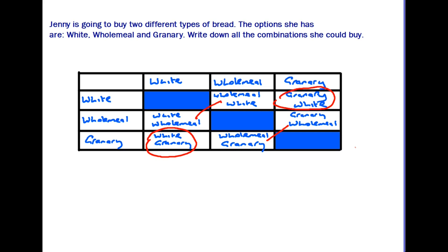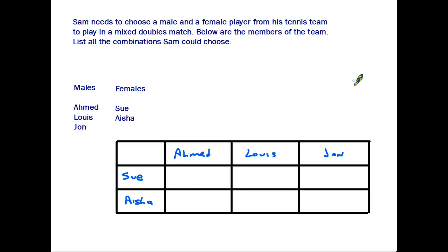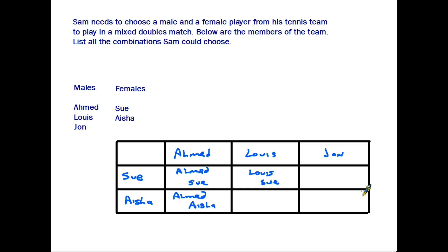It depends on the question as to how you would answer this, because you wouldn't need to put each combination twice unless it was a question asking you to put things in order. Finally, a very typical type of question: Sam needs to choose a male and a female player from his tennis team to play in a mixed doubles match. You have to list all the combinations Sam could choose. The female players are down the side, the male players are along the top, and that gives us a space in the centre to write down the possible combinations — for example, Sam could choose Ahmed and Sue, and so on.